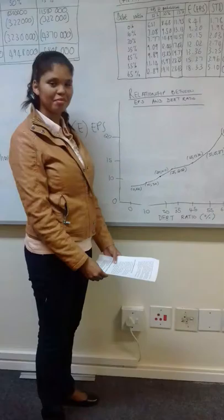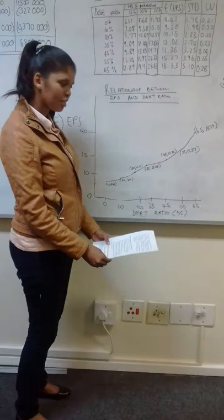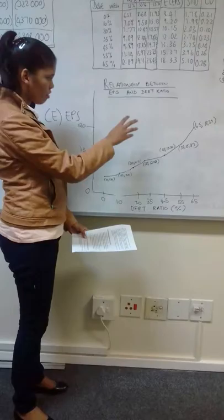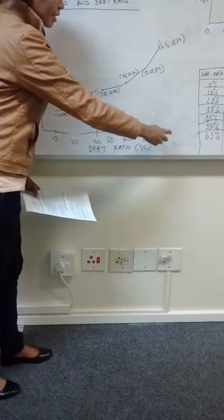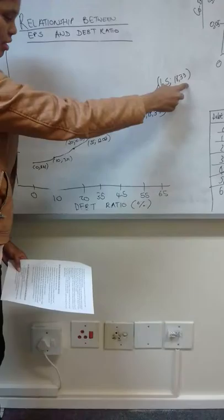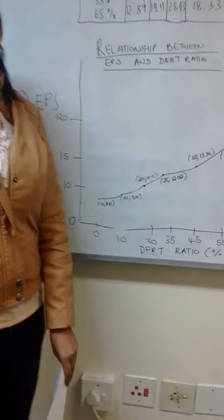I will now be handing over to Andrea, who will be explaining the relationship between EPS and the debt ratio. The EPS, or earnings per share, serves as an indicator of the company's profitability, while the debt ratio illustrates the capital structure of the company. With regards to our graph, the graph summarizes the seven capital structures: 0%, 10%, 20%, 35%, 45%, 55%, and 65% respectively. At a 0% debt ratio, which is the lowest capital structure, the EPS is at 841 cents.